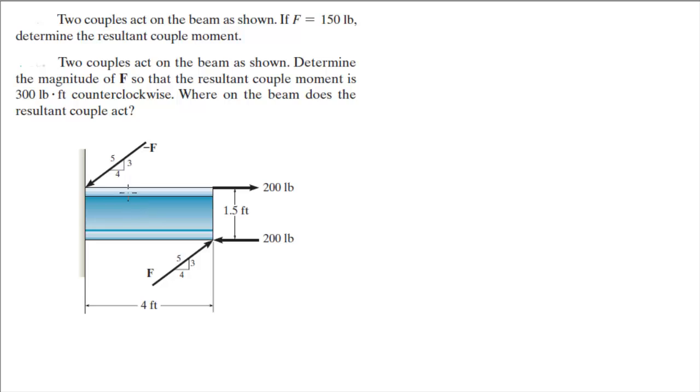Alright guys, let's do these two problems at the same time. The first one is two couples act on a beam. If f equals 150, find the resultant couple moment. And in the second one, they basically want you to find f so that the resultant couple moment will be 300 foot-pounds counterclockwise.